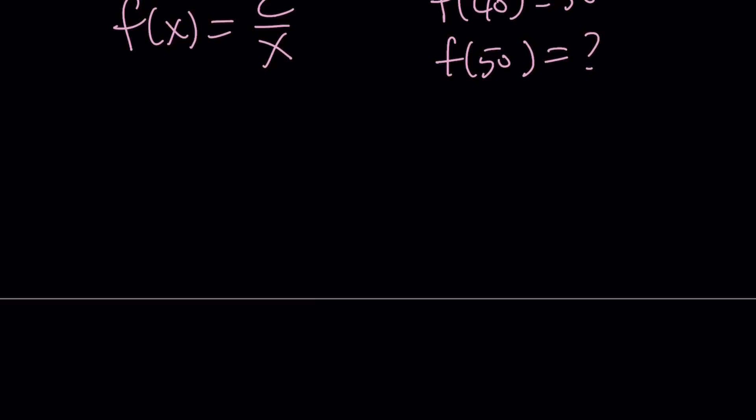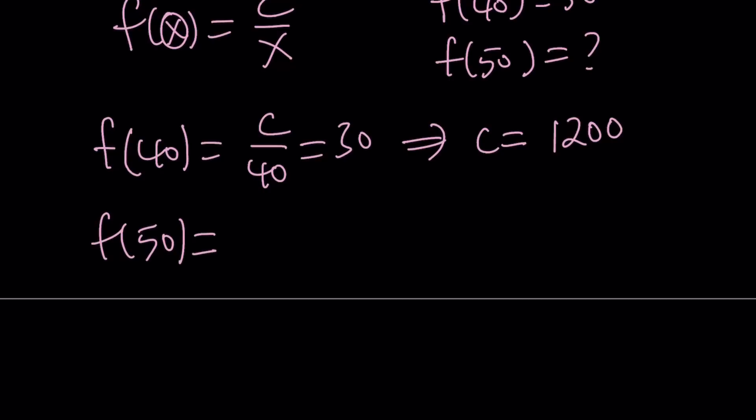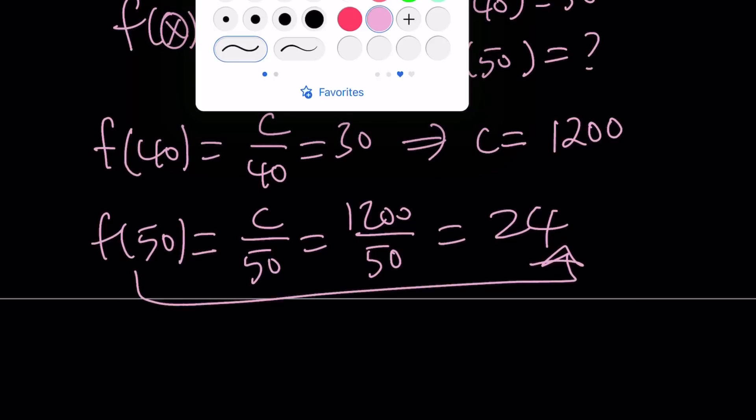So now, since I have an expression for f(x), I'm going to replace x with 40 first. Replace x with 40, you get c over 40. We know that it's equal to 30. From here, cross multiplication gives us c equals 1,200. How about f(50)? Well, f(50) is equal to c over 50. But c is 1,200, and the answer is going to be 24. So f(50) is 24. And this brings us to the end of the first method.